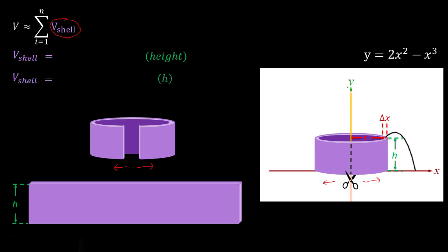And as you can see here, for a given x value, that h is going to be equal to the value of our function. So we can actually just replace that h with our function in this case. So getting more specific, that h becomes 2x squared minus x cubed.